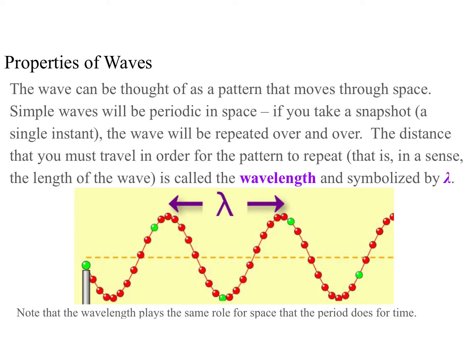All right, some properties of waves. A wave can be thought of as a pattern that moves through space. Simple waves will be periodic in space. If you take a snapshot at a single instant, the wave will appear over and over again. The distance that you must travel in order for the pattern to repeat along one of these snapshots, so we freeze in time, that is, in a sense, the length of the wave is called, logically enough, the wavelength and symbolized by lambda.